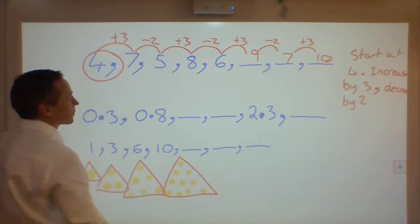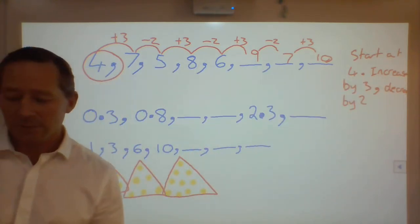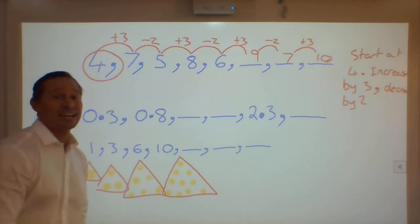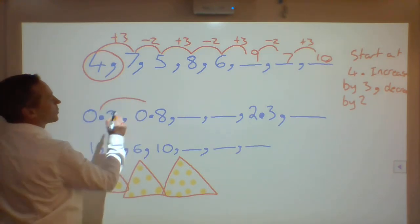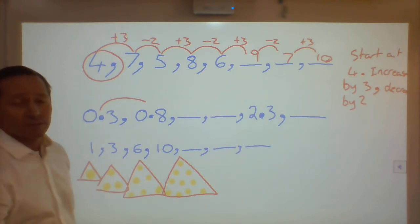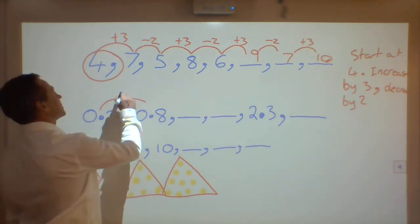Next one, 0.3. In the language terms, we'd say 3 tenths. 0.3, 0.9, is an increase of 0.5, or 5 tenths.